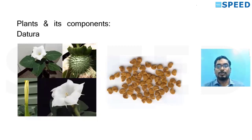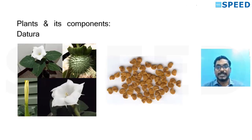An important clue: Datura blooms only at night or in the shade, so photos are often taken inside a room or with a dark background. If the background in the photo is night-time, it is likely Datura — deadly nightshade. The seeds of Datura are shown next to it, which is a common differentiating point between chili seed and Datura seed — to be covered in upcoming sessions.